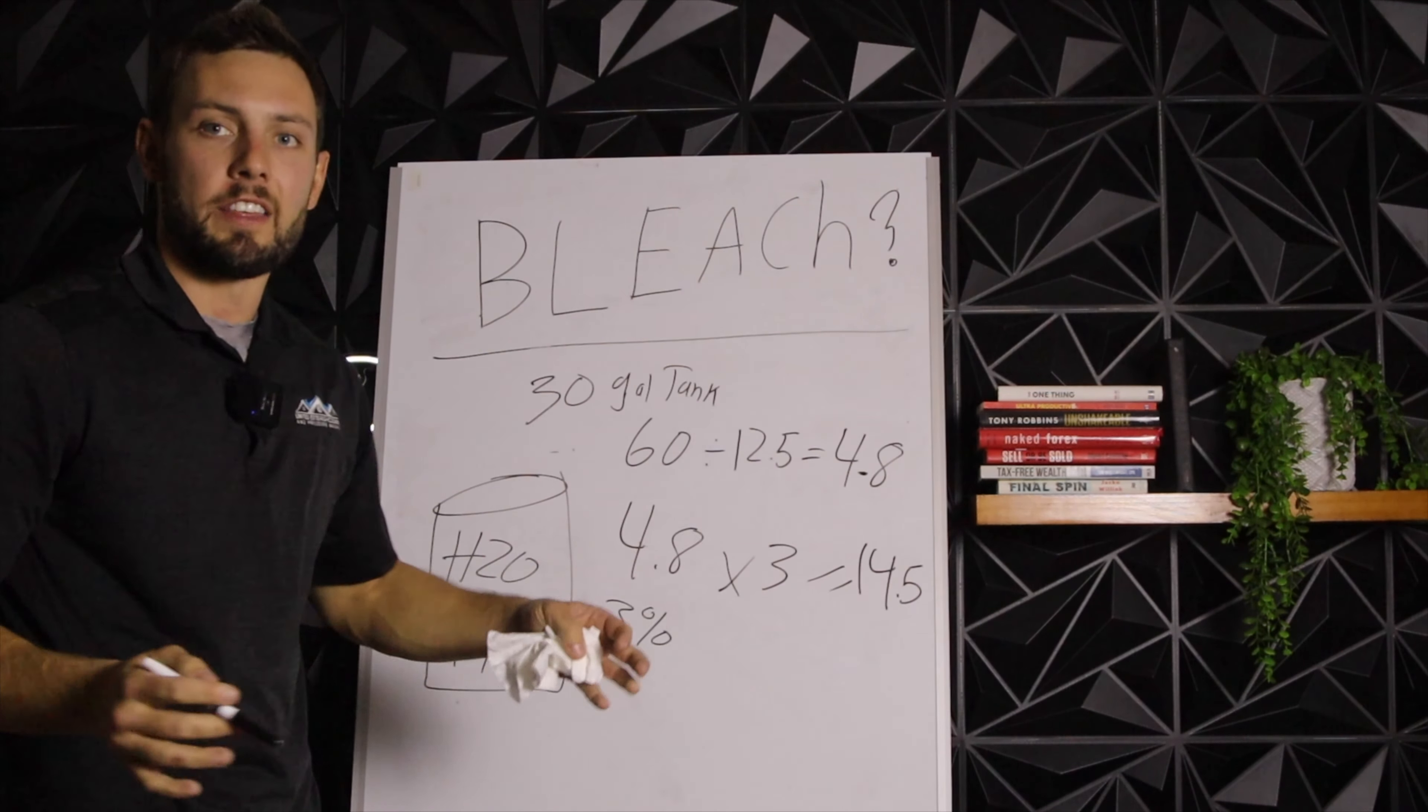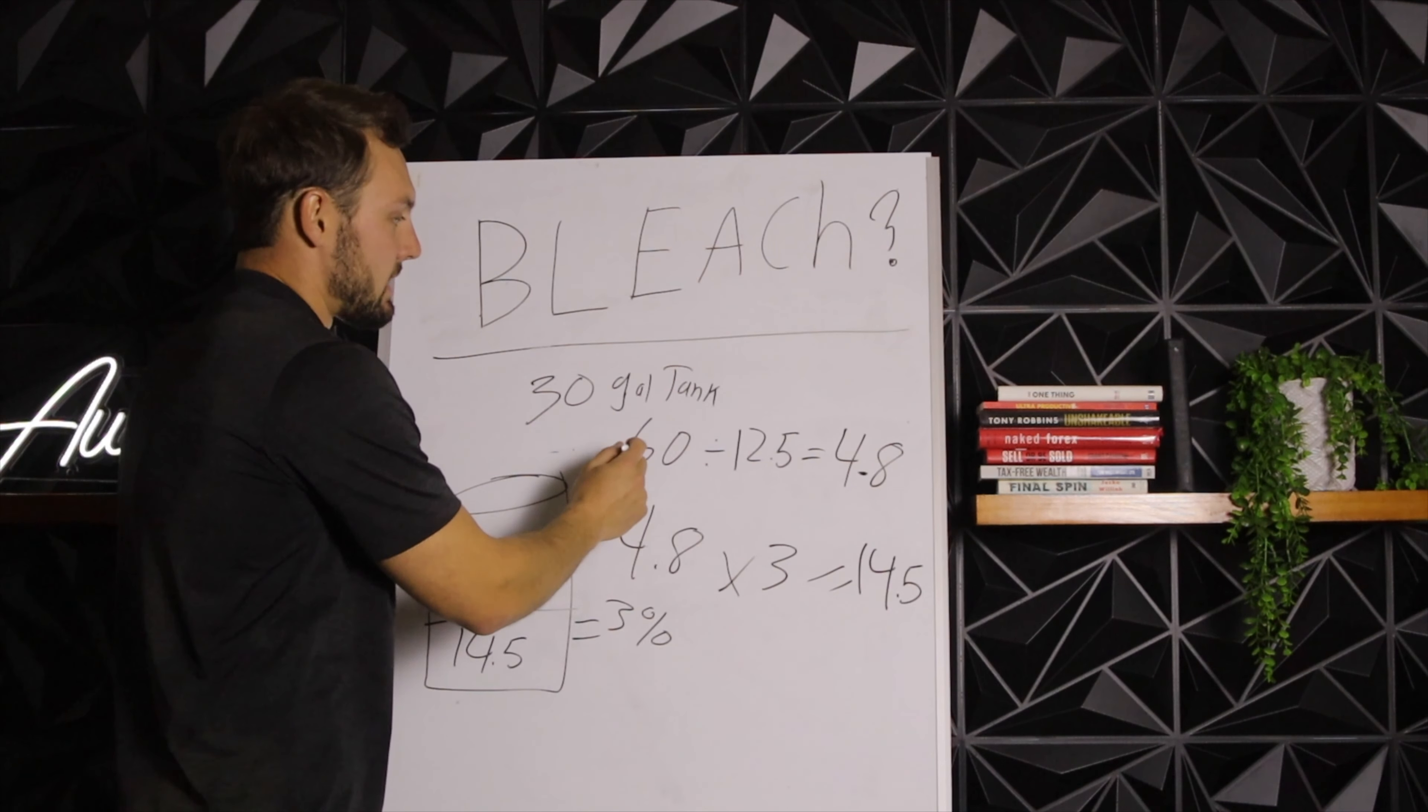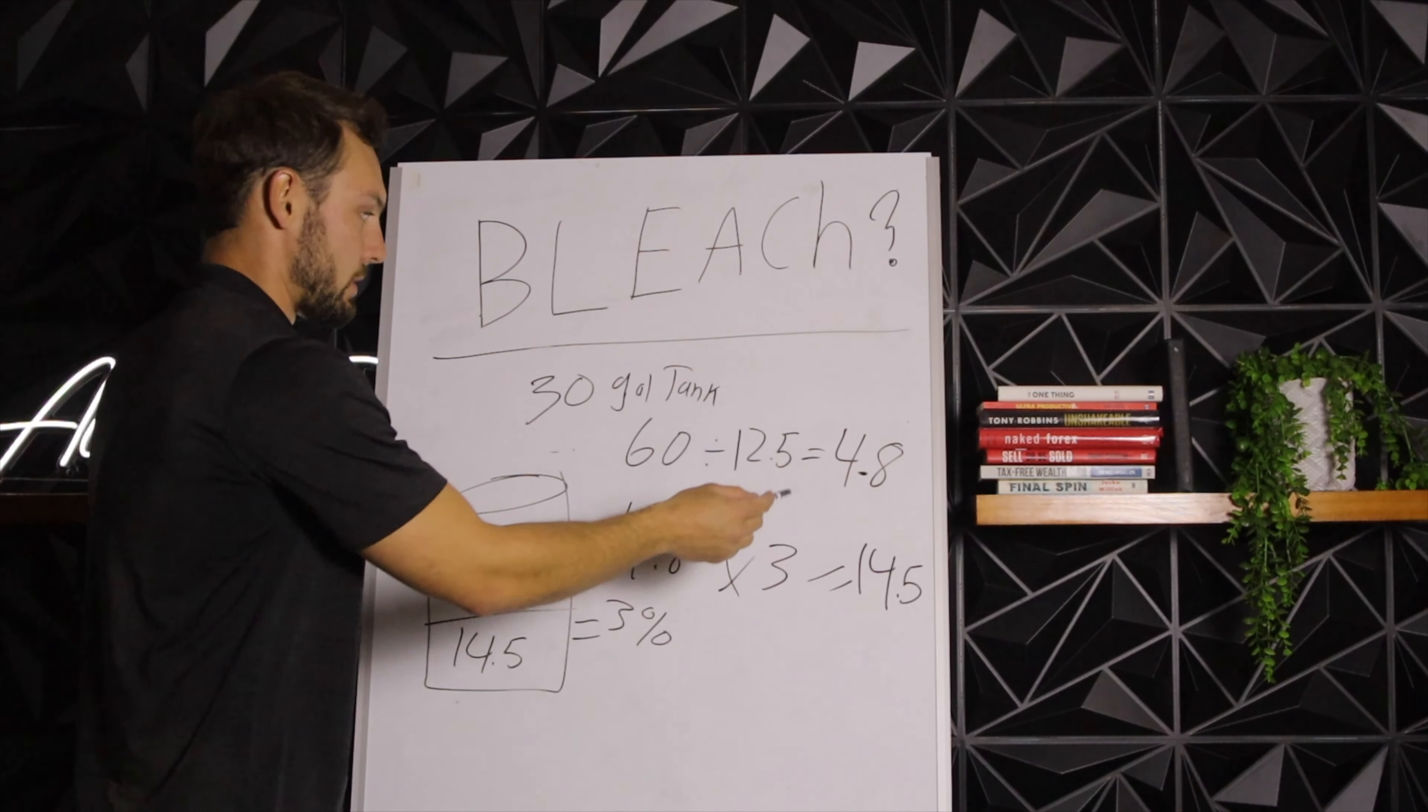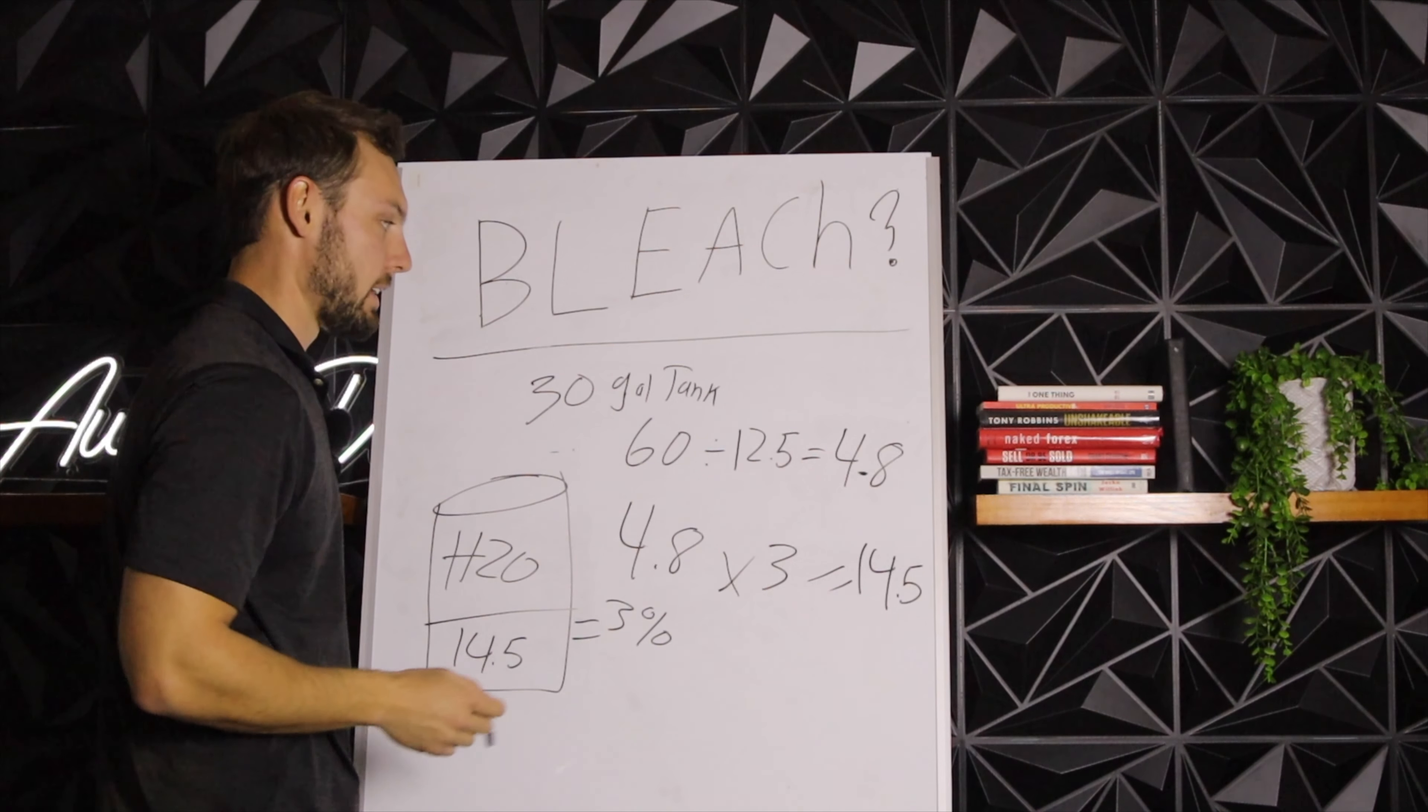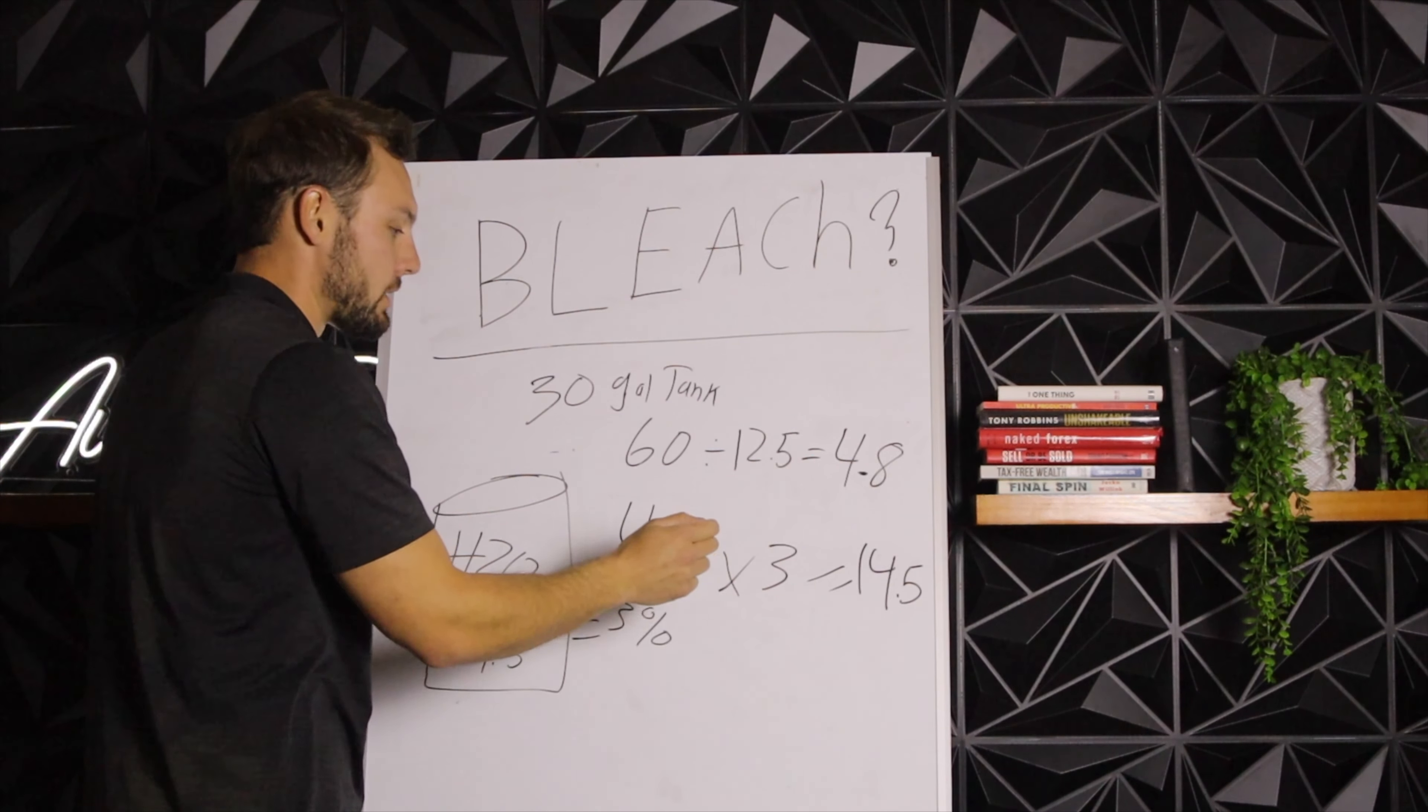I'm going to put this formula down in the description so you guys can read it, copy and paste it. Simple: tank size divided by bleach strength gives you a number, in this case a factor of 4.8, which is all dependent on how big your batch mix tank is. Take that factor, multiply it by what you are trying to achieve.